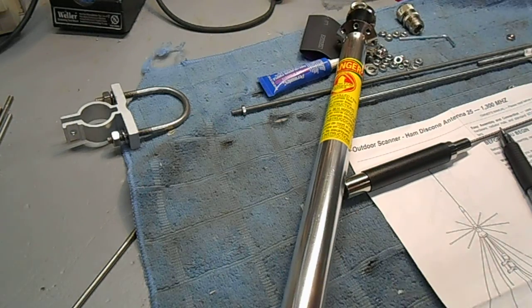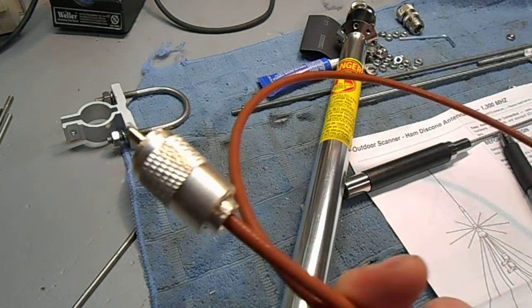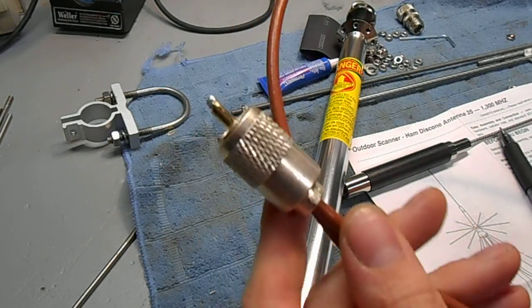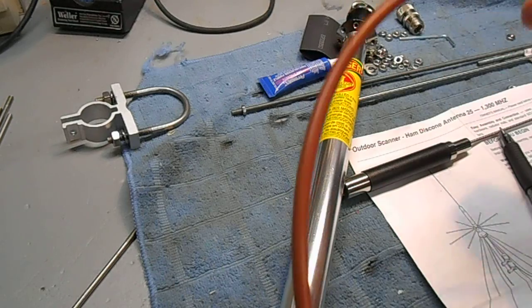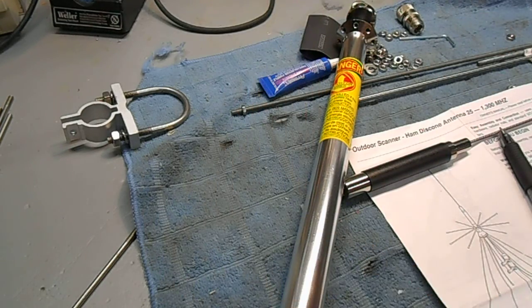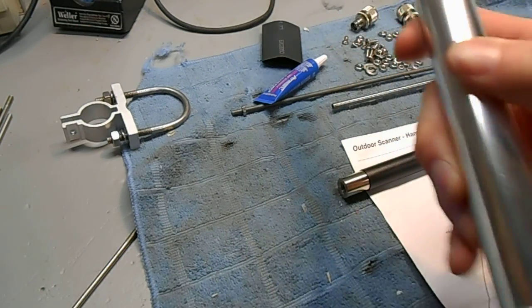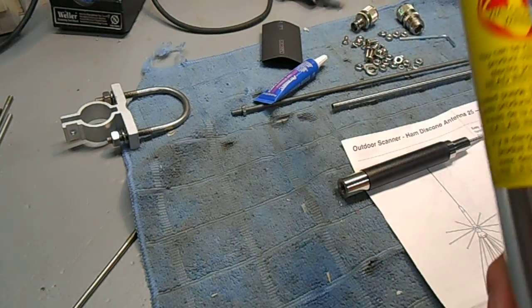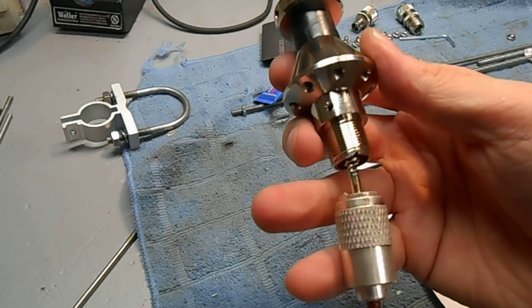You want to make a little coax jumper. I have a little jumper here that is PL259 on one end. I got the end female on the other end. This will go to my main incoming feed line. This will connect up to the discone antenna. This will just connect up like that.